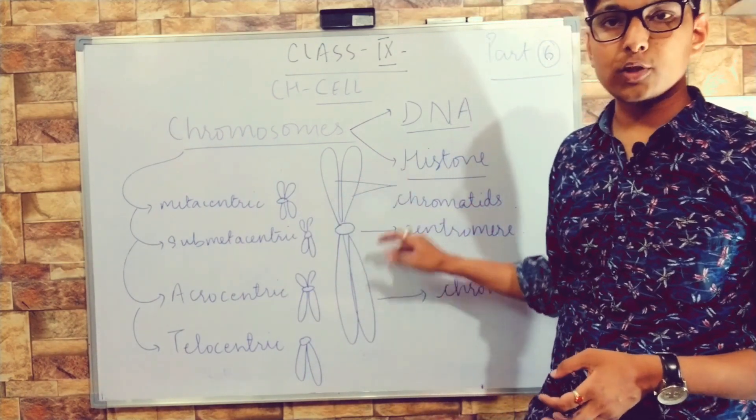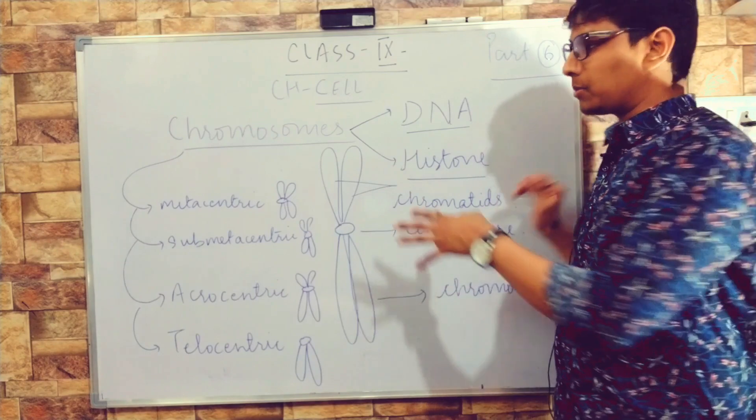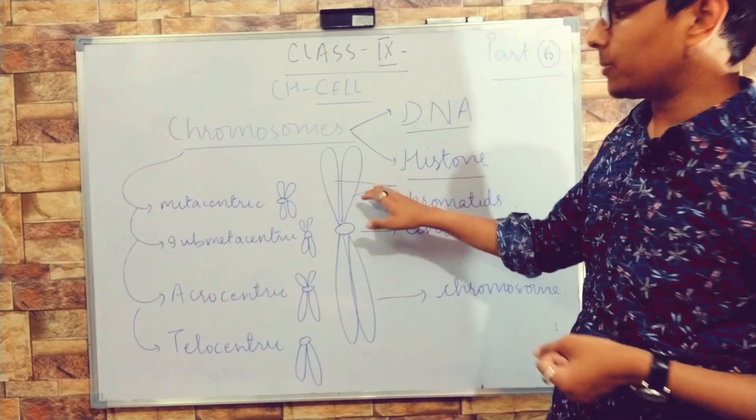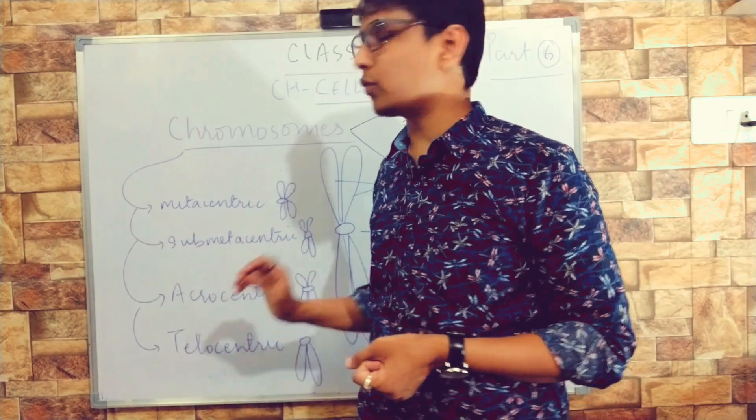These arms may be of equal size or unequal size—they may have the same strand size or different sizes. On the basis of that, we have four types of chromosomes.